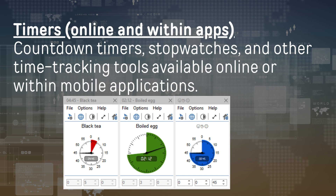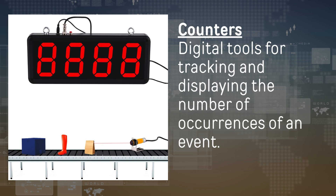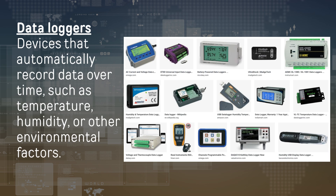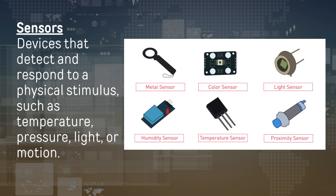Timers, available online and within apps, include countdown timers, stopwatches, and other time-tracking tools available online or within mobile applications. Counters are digital tools for tracking and displaying the number of occurrences of an event. Data loggers are devices that automatically record data over time, such as temperature, humidity, or other environmental factors. Sensors are devices that detect and respond to a physical stimulus, such as temperature, pressure, light, or motion.